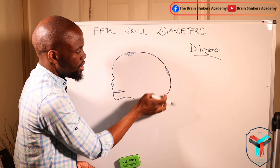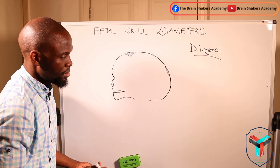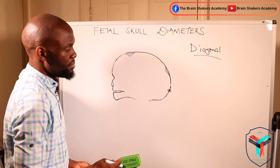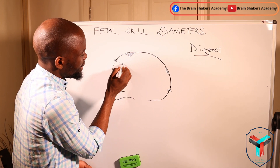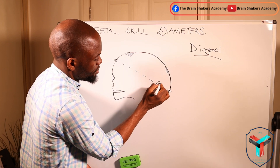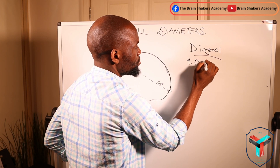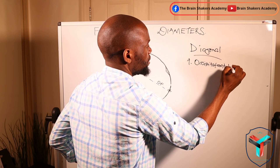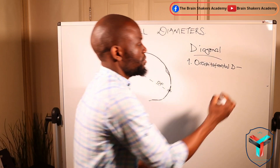From the occiput or from the occipital bone to the frontal aspect, we have a diameter that we call the occipital frontal diameter. So we are moving from the occipital prominence to the prominence of the frontal bone, and we are going to call this diameter the occipital frontal diameter, or OF.